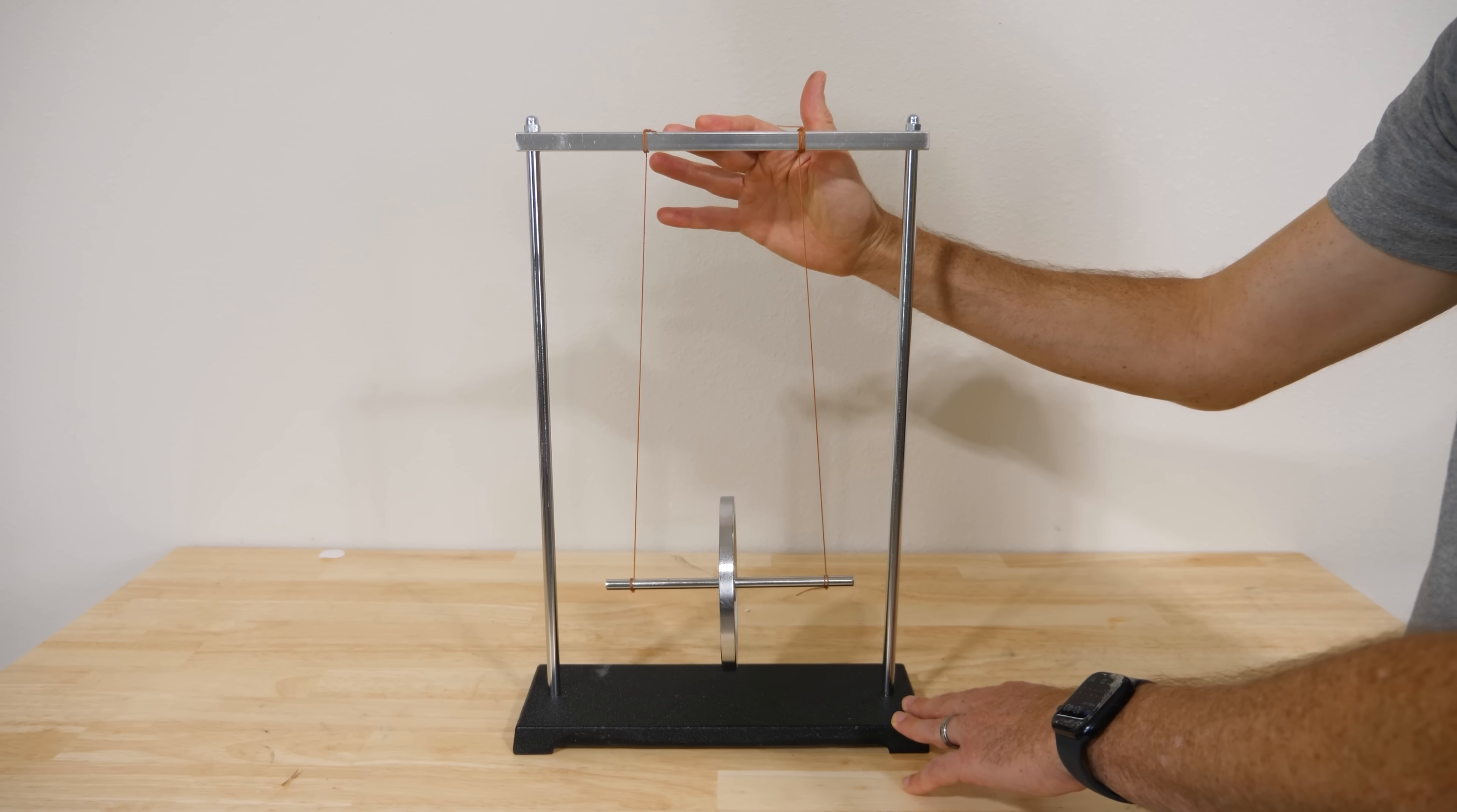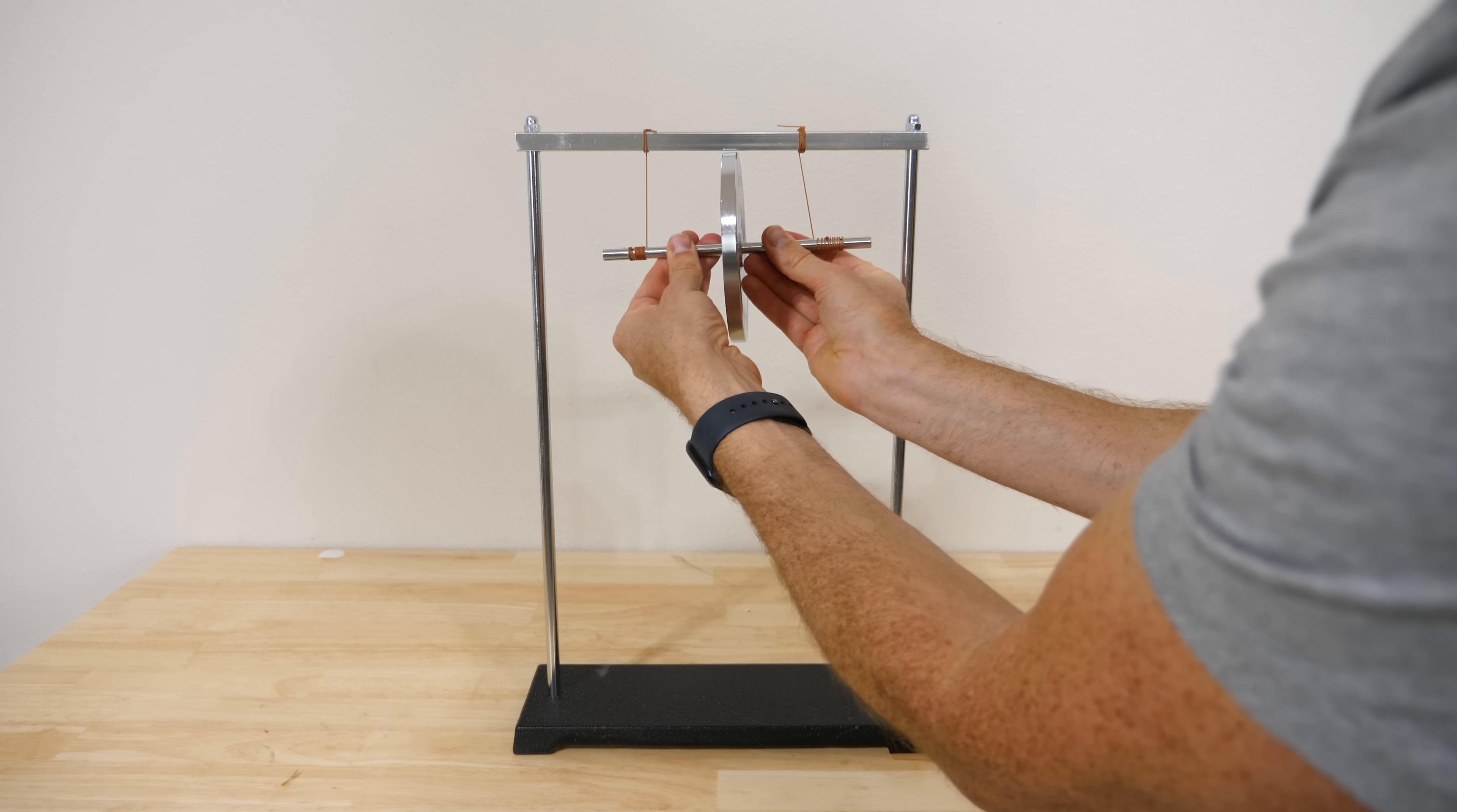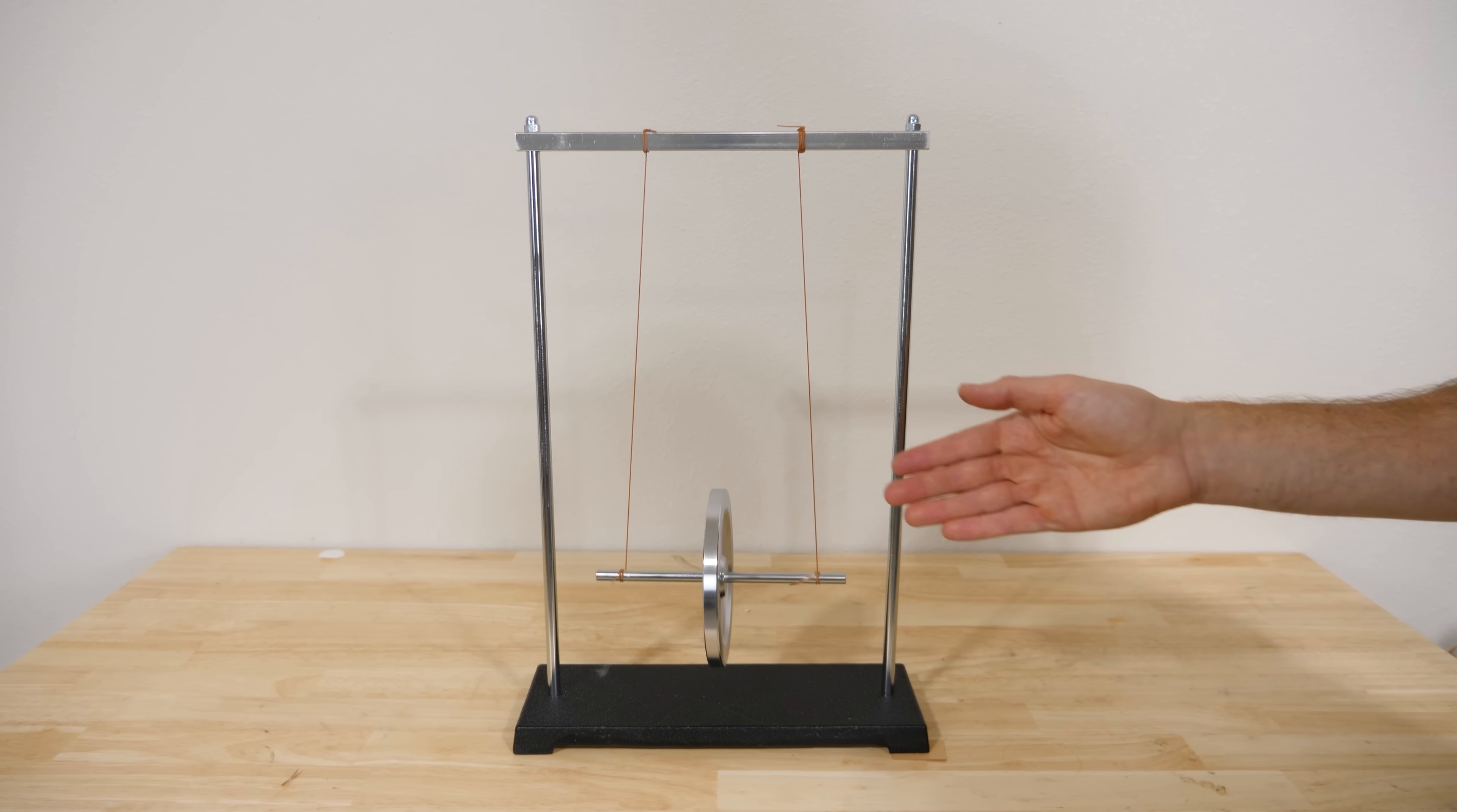This is frequently used in classrooms to show the conversion between potential energy and kinetic energy. For example, I can wind up the string on these rods here, get it all the way to the top, and then if I just let it go you can see that it unravels but then it ravels back up and bounces almost to the same height that it started at. Now it'll bounce back and forth like this for a long time.